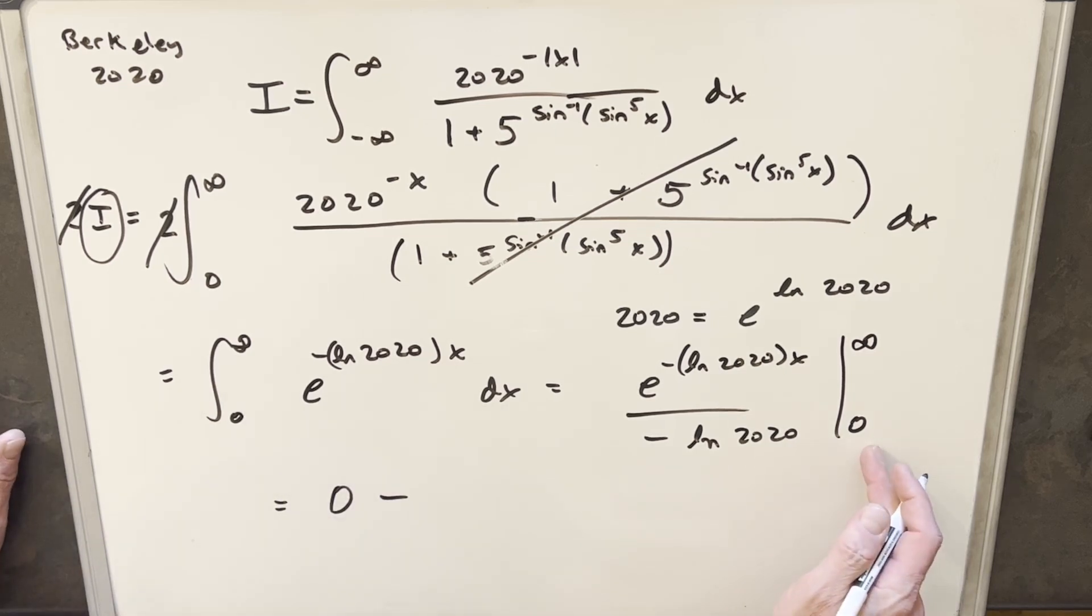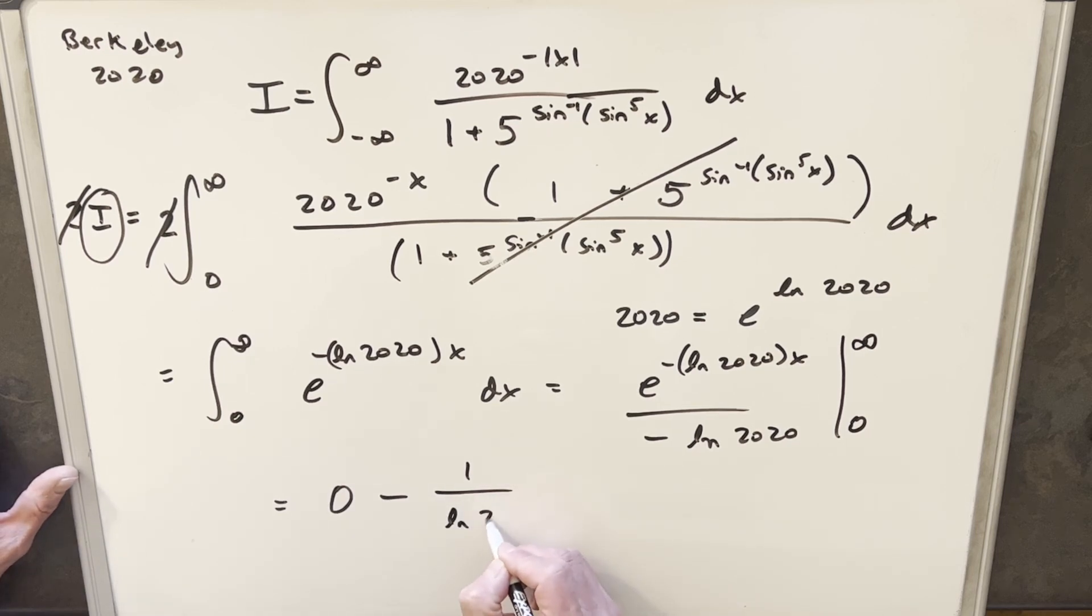And then for our second part, we plug a 0 in. E to the 0 is 1. So we're going to have 1 over minus ln 2020. I'm just going to take that minus sign and cancel it here. And that's it. We're left with our solution. It's just going to be 1 over ln 2020.